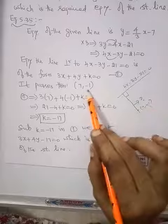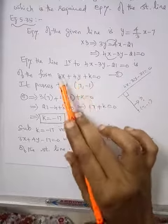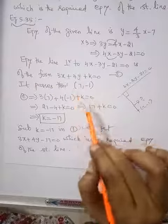Now it passes through 7, minus 1. Substitute x is 7, y is minus 1. 3 into 7 plus 4 into minus 1 plus k is 0.